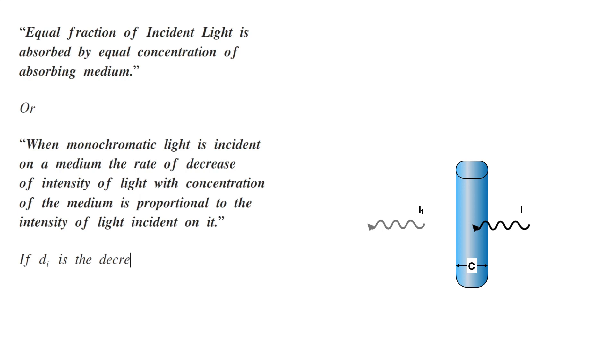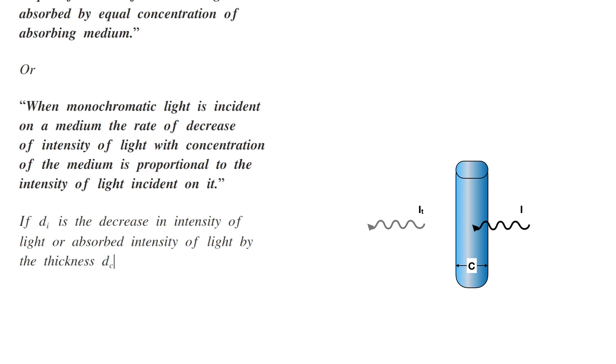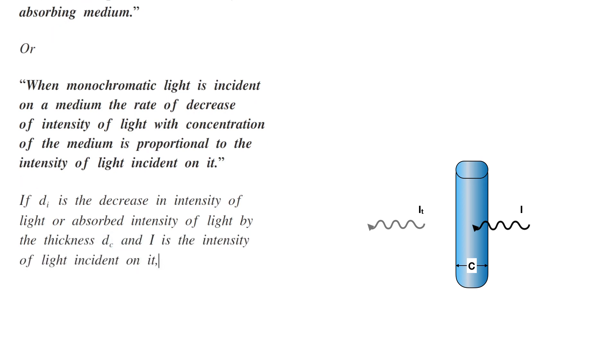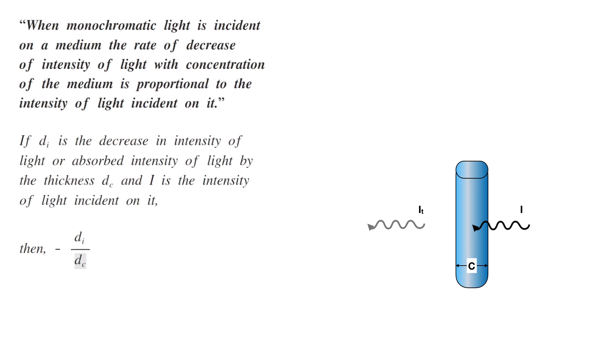If dI is the decrease in intensity of light or absorbed intensity by the thickness dC and I is the intensity of incident light on it, then minus dI by dC is proportional to I.